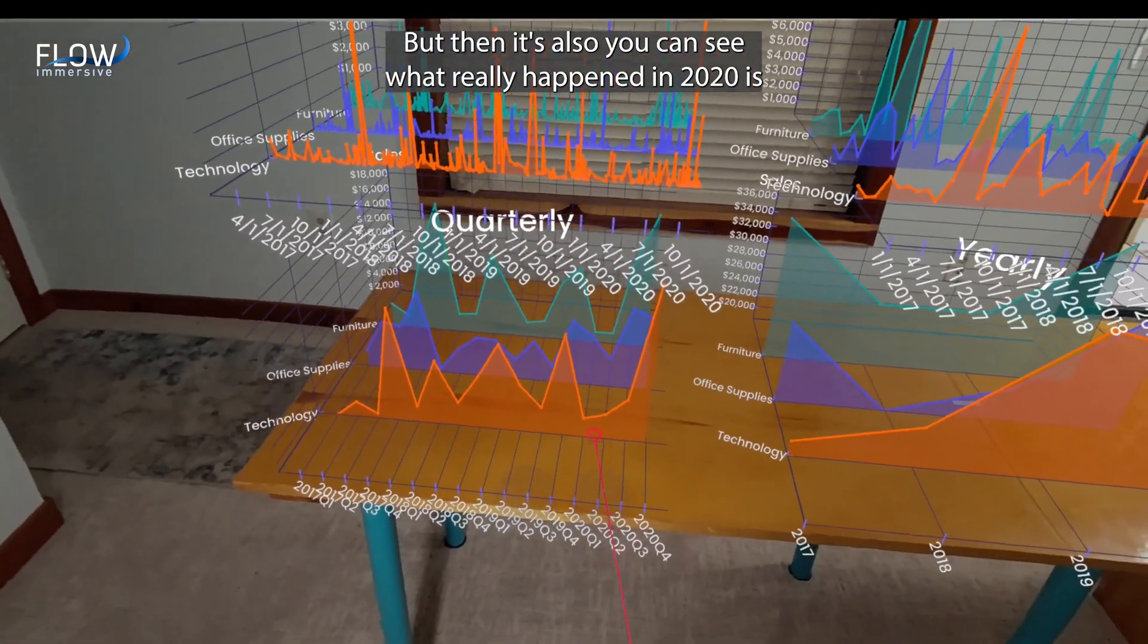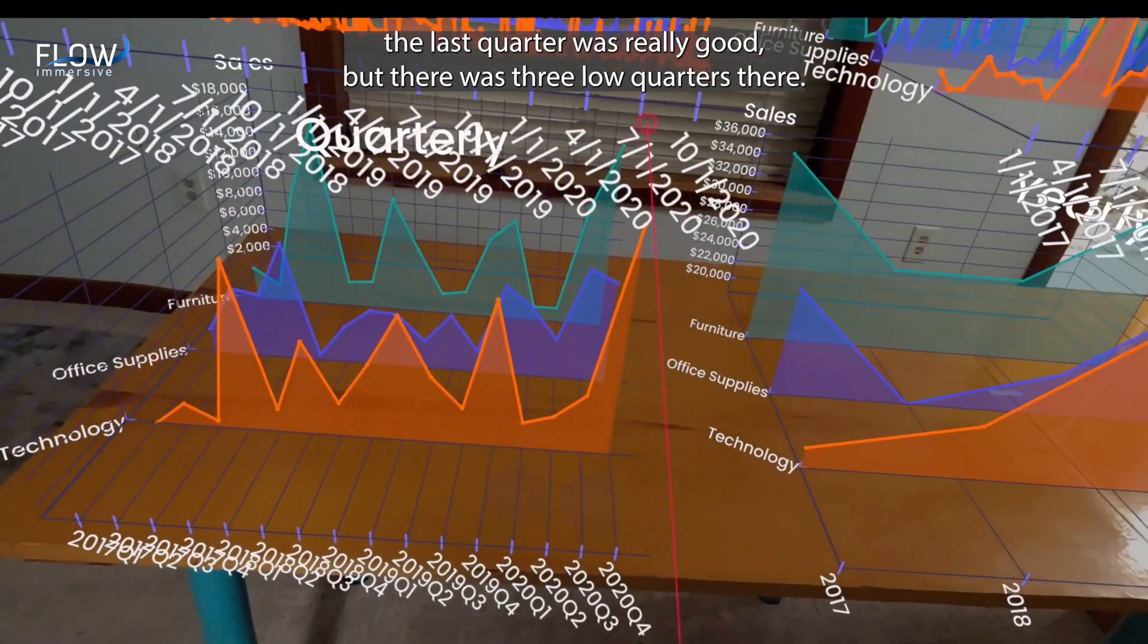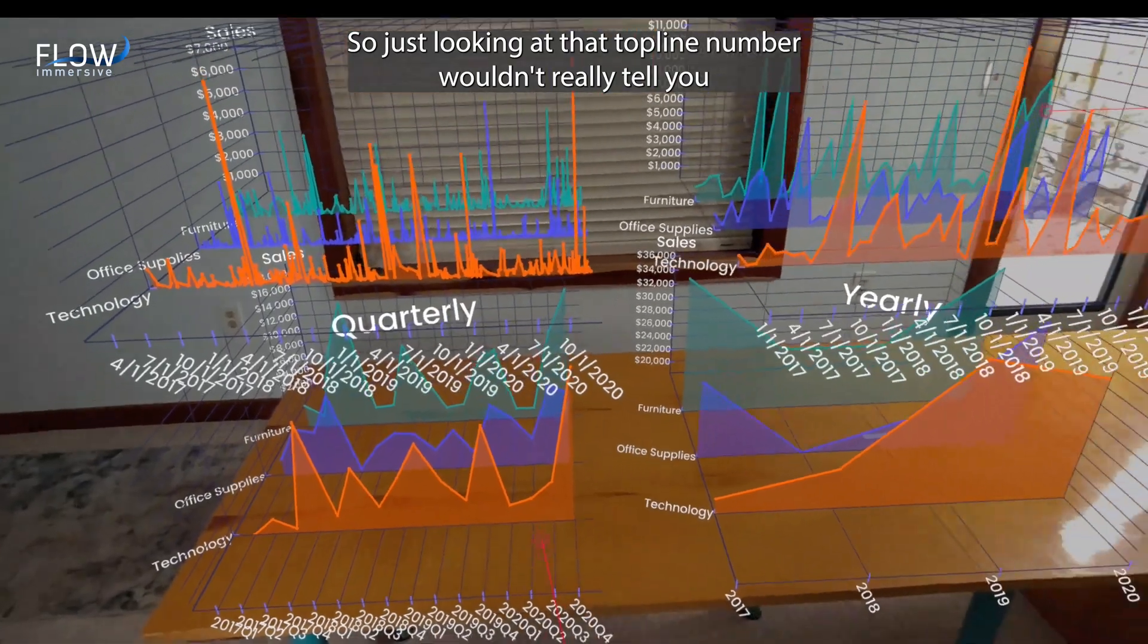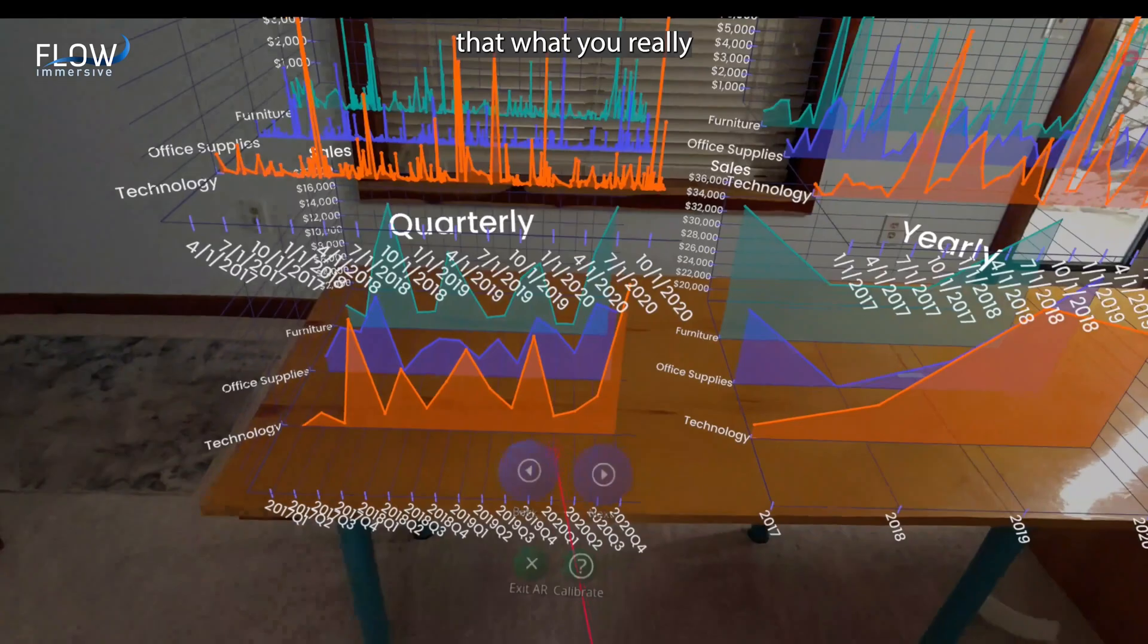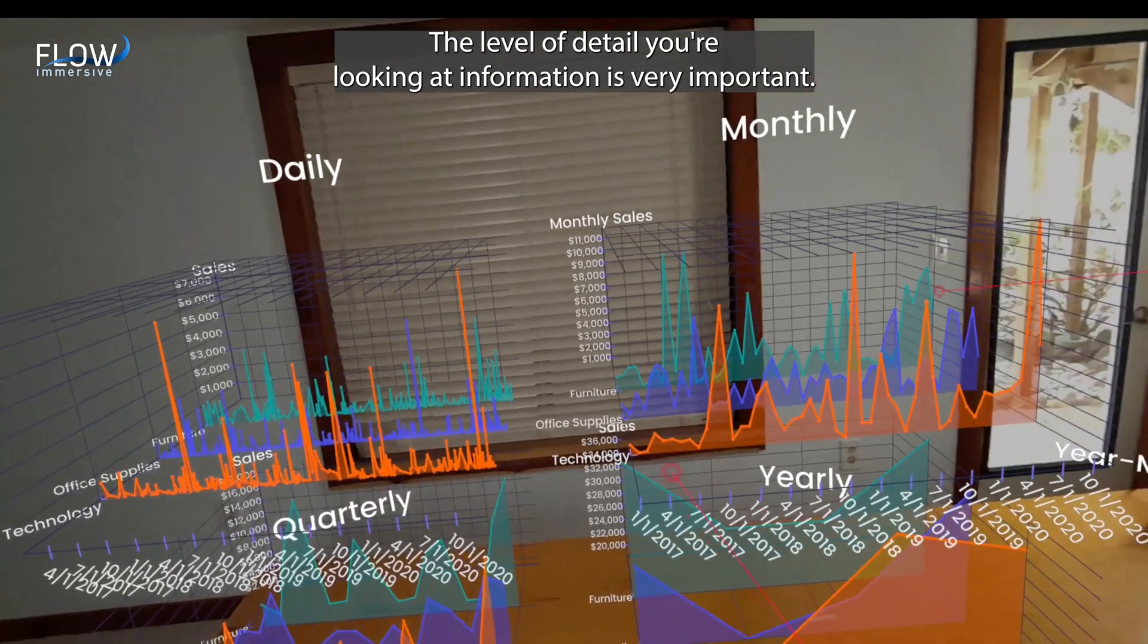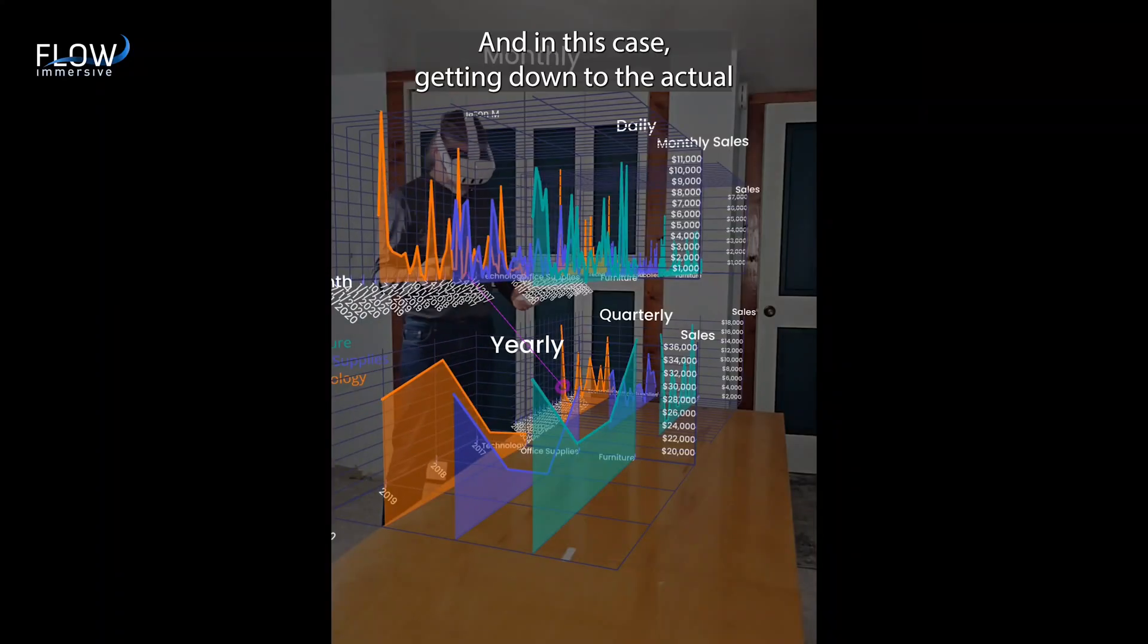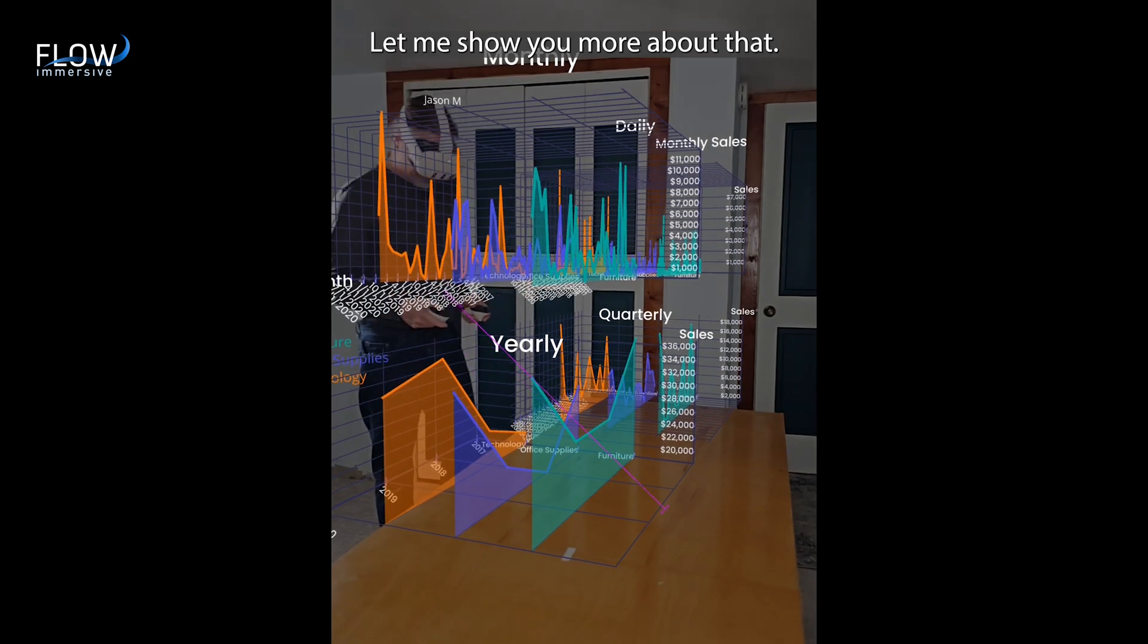But then you can see what really happened in 2020 is the last quarter was really good, but there's three low quarters there. So just looking at that top line number wouldn't really tell you that what you really should have been looking at is what happened in the prior three quarters. The level of detail you're looking at information is very important. And in this case, getting down to the actual transactions gets to be really quite meaningful. Let me show you more about that.